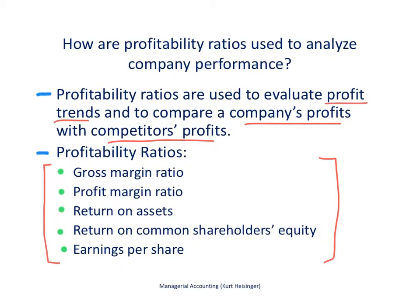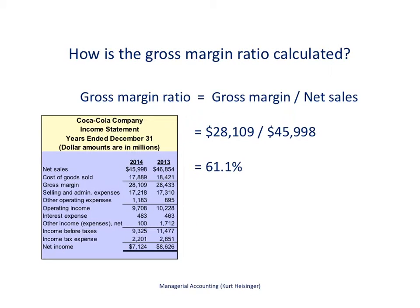The next few slides will describe exactly how to calculate each of these ratios. The first ratio is the gross margin ratio, and the information needed to calculate this comes exclusively from the income statement. For all the ratios we're going to be talking about, we're going to be using Coca-Cola Company as the example. Here's Coca-Cola's income statement with information for 2014 and 2013, and we'll be focusing on the most current year, 2014.